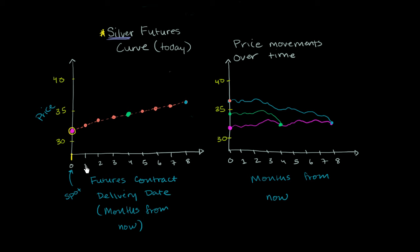When I say one out here, this is one month in the future. I'm not talking about the spot price of silver in a month. I'm talking about the price today in the market if you were to agree to buy or sell silver in a month. The futures price for a delivery one month out. That's what that is right now.